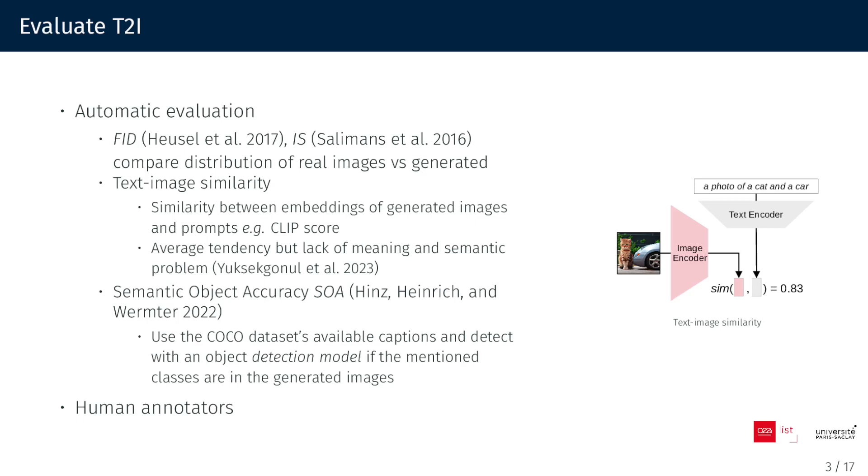The Semantic Object Accuracy uses the captions available in COCO to generate images and detect whether the mentioned class in the prompt appears in the image. Lastly, we can employ human annotators to assess the quality of generated samples.